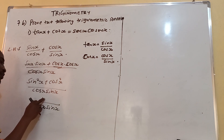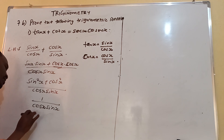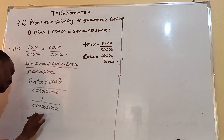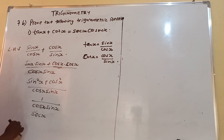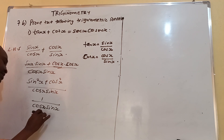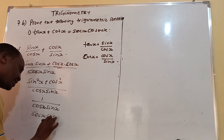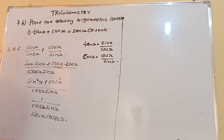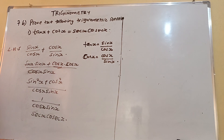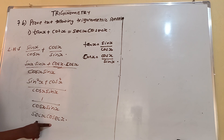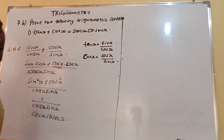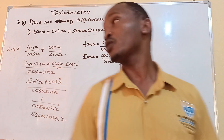So this will be 1 over cos X sin X. We know 1 over cos X is sec X and 1 over sin X is cosec X. So we have managed to make the left hand side equal to the right hand side, and therefore we have proved that identity.